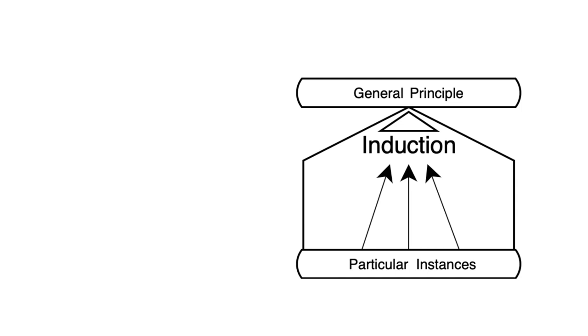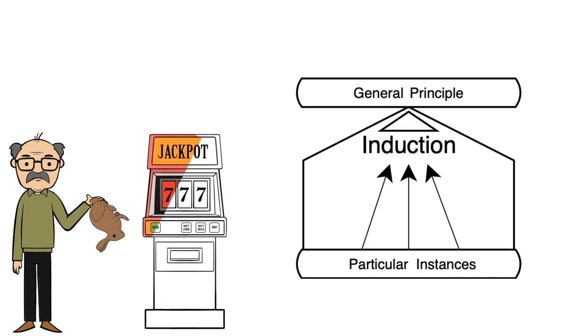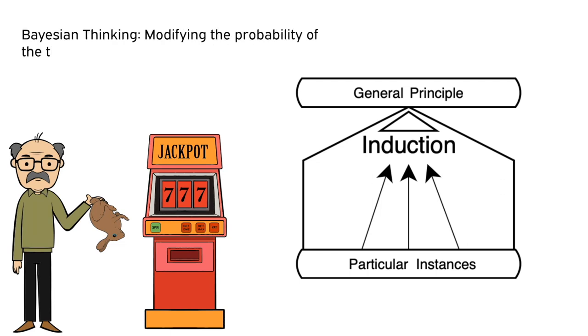Induction can sometimes lead to superstitious beliefs because a person may observe an apparent consistency and extrapolate a conclusion. If a visitor at a casino just started carrying a lucky rabbit's foot and when they played their first slot machine they won a nice prize, they could conclude the lucky rabbit's foot actually made them luckier. If they win again, it would likely strengthen their belief. However, if they subsequently had a run of poor luck, they would most likely update their beliefs, a process or mental model called Bayesian thinking, where a thinker modifies the probability of the truth of a hypothesis as new evidence comes to light.